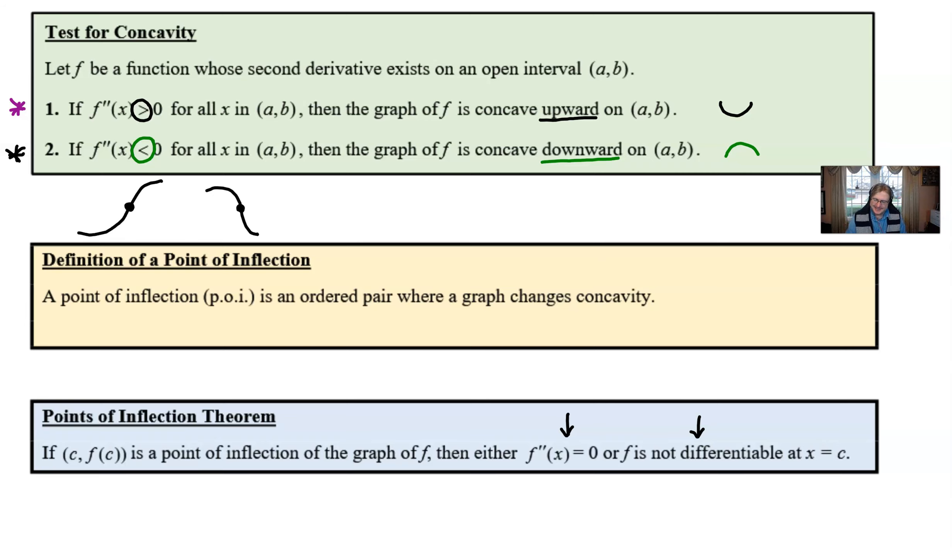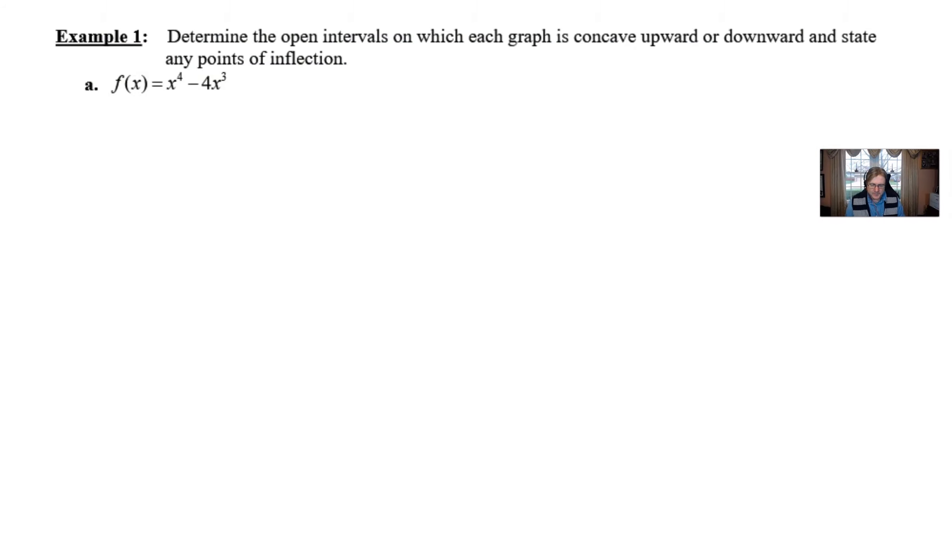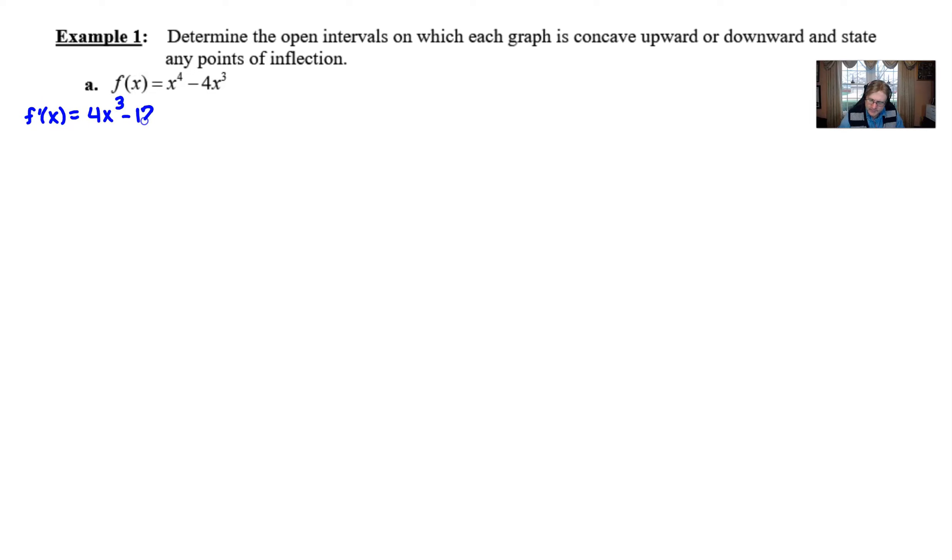So let's go ahead and take a look at our first example here in one part a. The directions say state the open intervals on which each graph is concave upward or downward and state any points of inflection. On a difficulty scale, this one's certainly a little bit lower on the rung. I would probably classify this as a 2 or a 3 in level of difficulty. It's simply because it's a polynomial function and therefore it doesn't really have any tricks to its derivative. So the derivative that we're going to take, f prime, is going to look a little something like this, 4x cubed minus 12x squared.